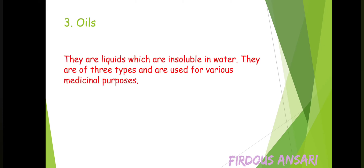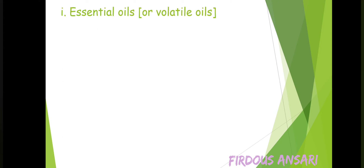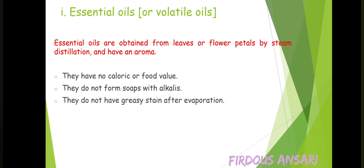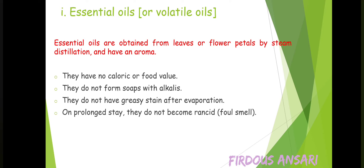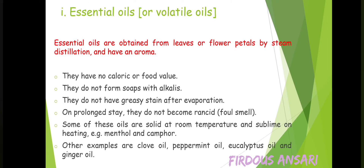Oils are liquids which are insoluble in water. They are of three types: essential or volatile oil, fixed oil, and mineral oil. Essential oils are obtained from leaves or flower petals by steam distillation and have an aroma. They have no caloric or food value. They do not form soaps with alkalies, do not leave greasy stains after evaporation, and on prolonged storage do not become rancid. Some are solid at room temperature and sublime on heating, for example menthol and camphor. Other examples include clove oil, peppermint oil, eucalyptus oil, and ginger oil.